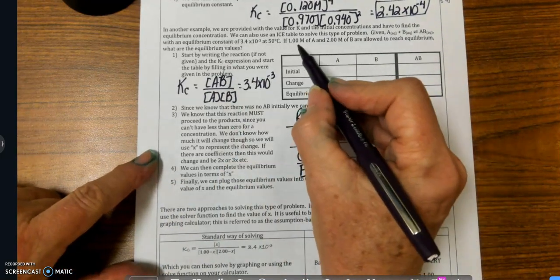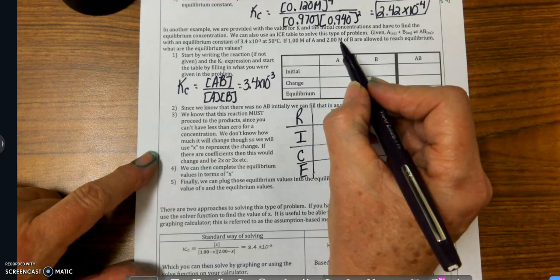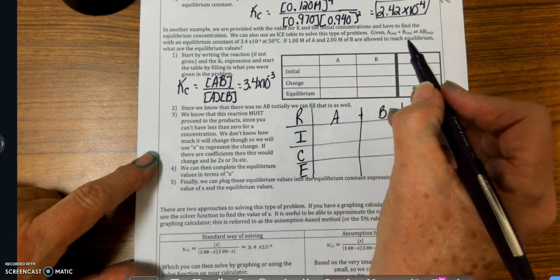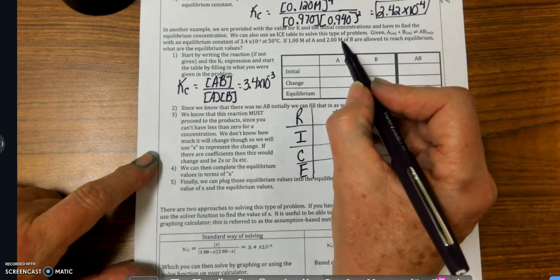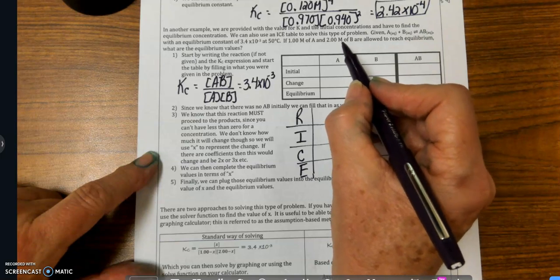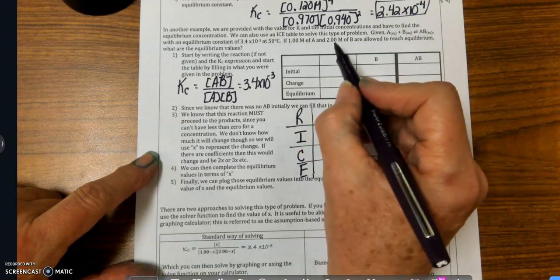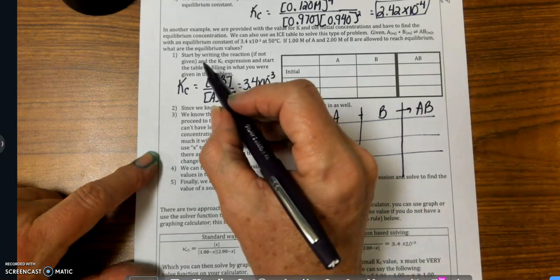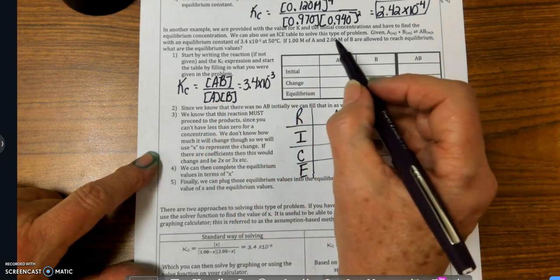Now, if one molar of A and two molar of B are allowed to reach equilibrium, that means that these are my initial concentrations. They are not at equilibrium yet. They are allowed to reach equilibrium. What are the values? So basically...